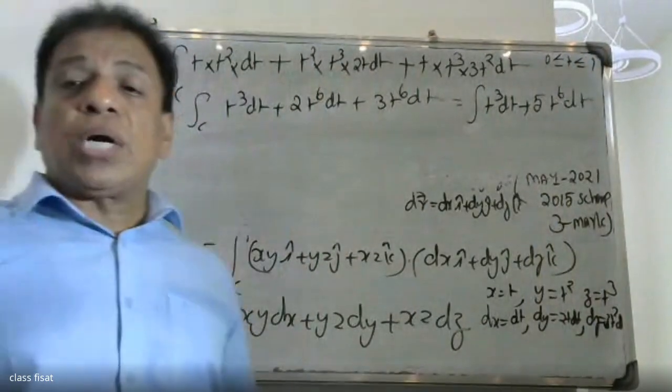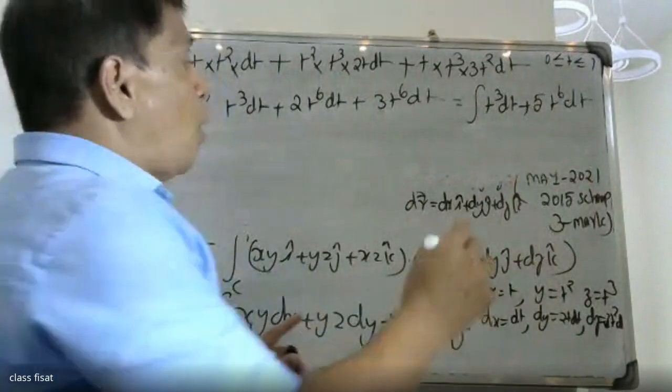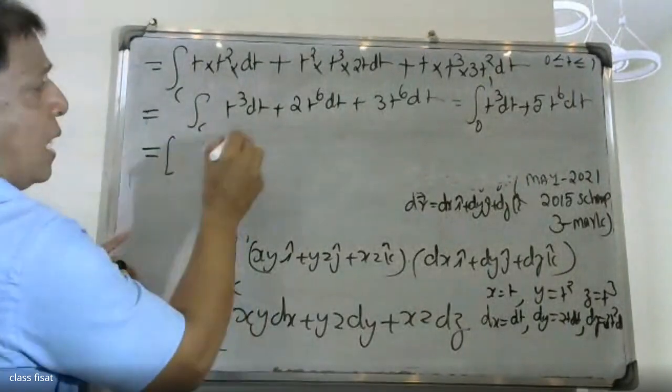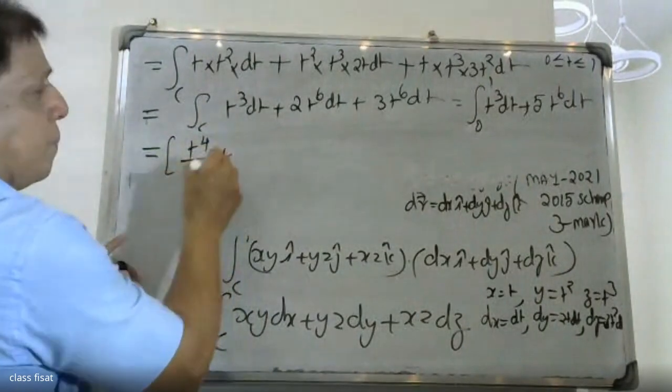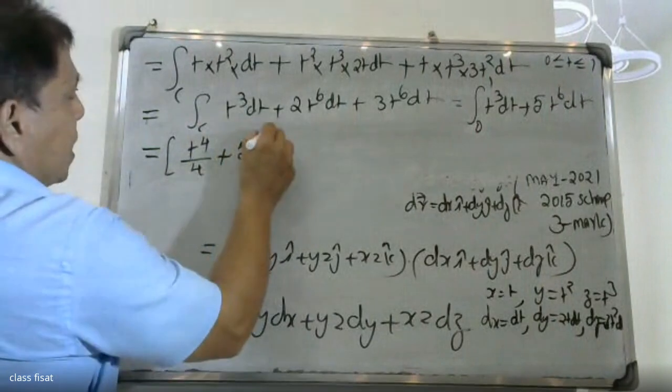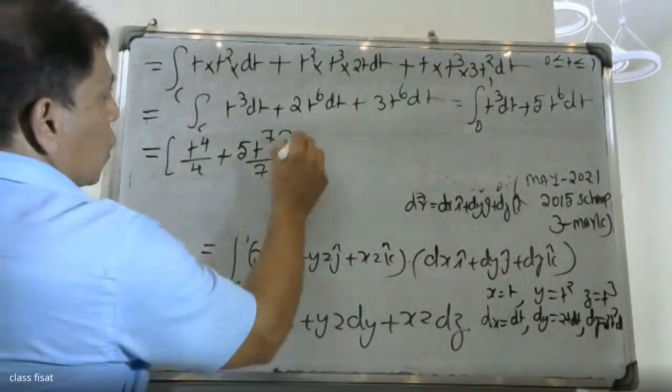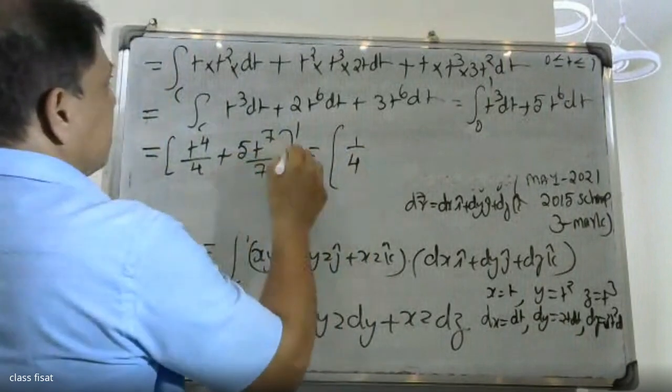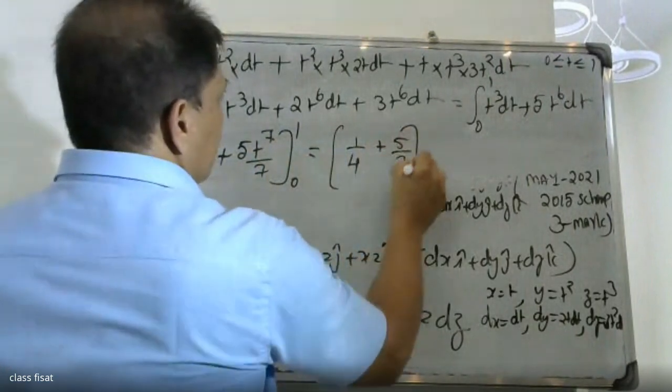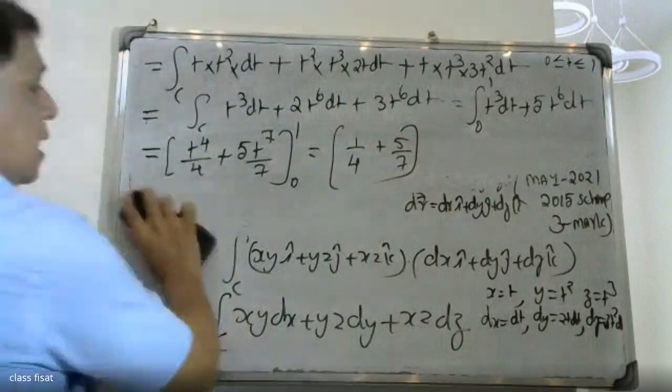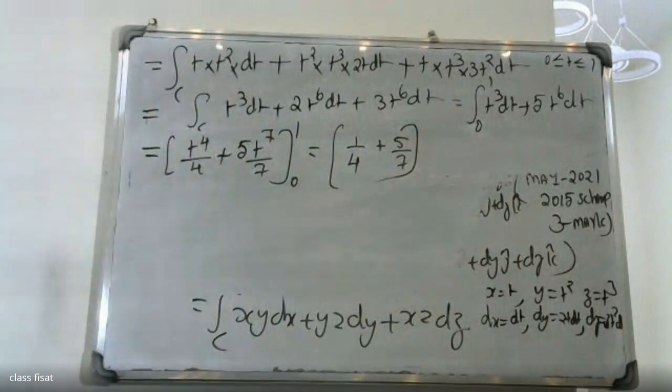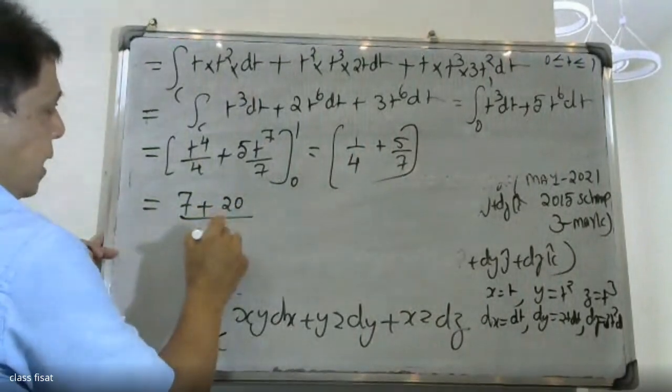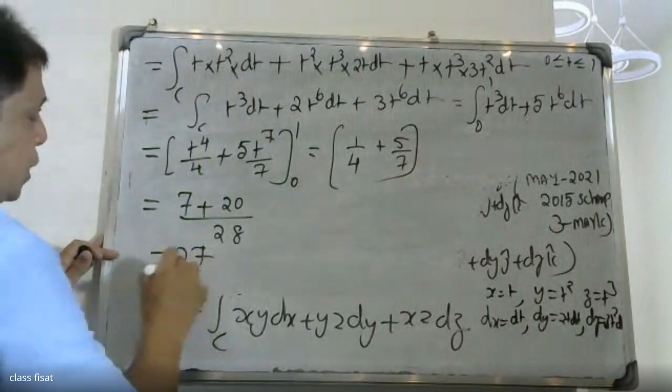The integral is t⁴/4 plus 5t⁷/7, evaluated from 0 to 1. Applying the limits, we get 1/4 plus 5/7. Finding the common denominator: 7/28 plus 20/28 equals 27/28. The answer is 27/28.